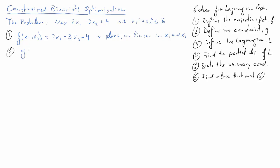Second, we define the constraint. So g(x₁, x₂) is reformulated as 16 minus x₁ squared minus x₂ squared, which has to be greater than or equal to 0. In the Lagrangian setup, the constraint will always have to be greater than or equal to 0. So the next step is to define the Lagrangian function.